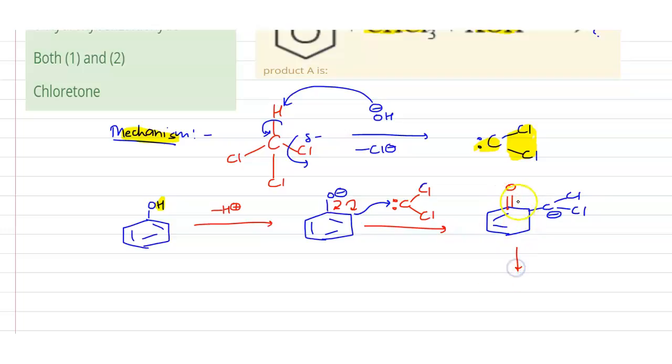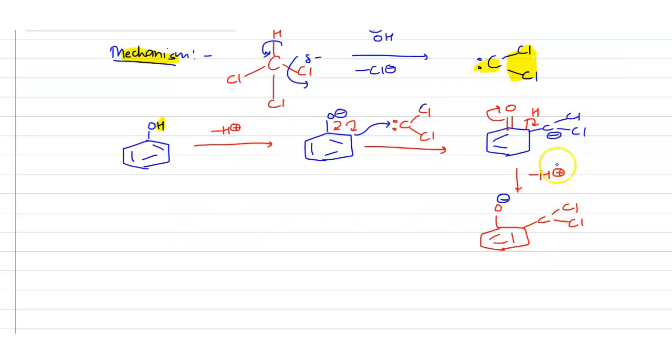Now what happens here? In order to regain its aromaticity there will be a release of this proton. The proton will get attacked by this C minus, here it will be CH. Now there will be a release of the chloride ion and here it will have electron deficient carbon.